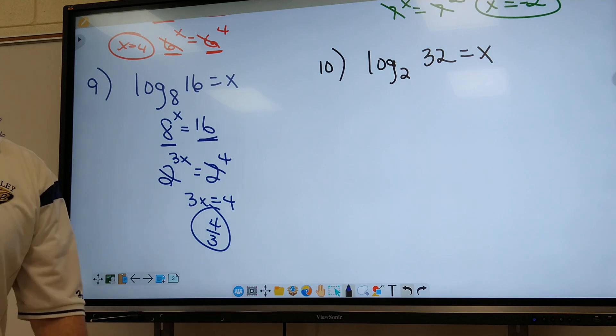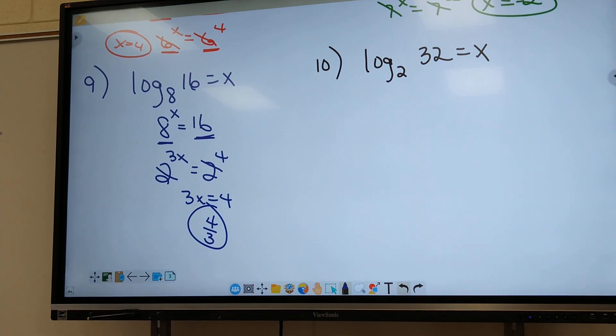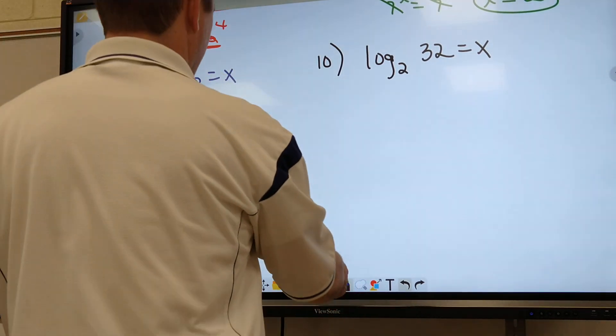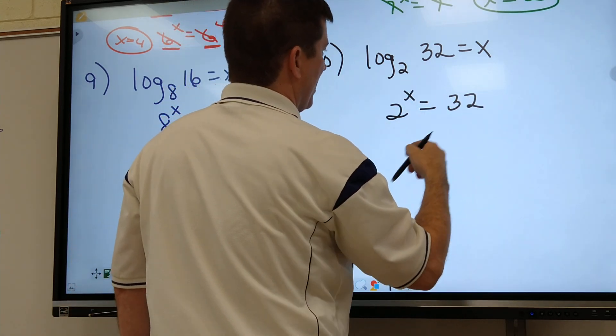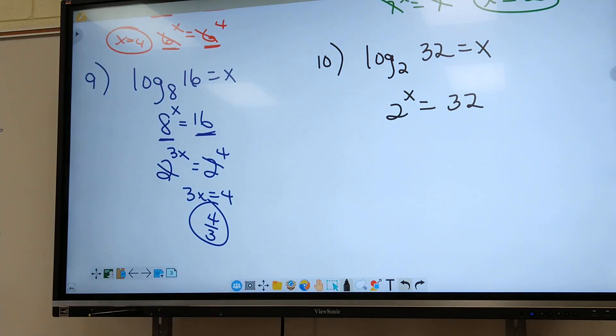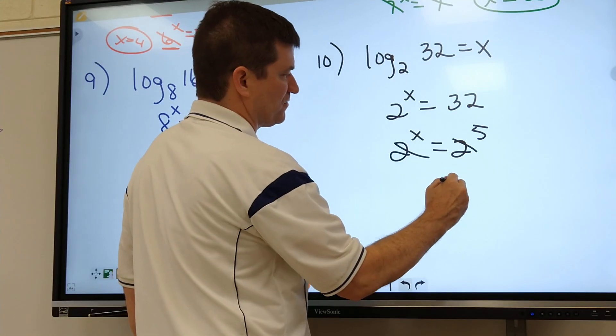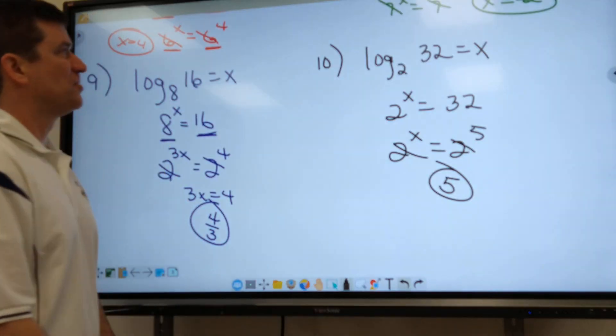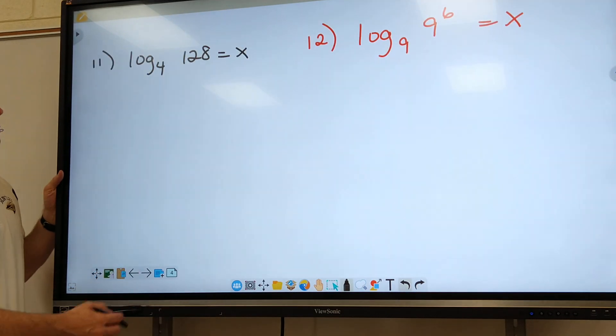All right, you should be able to do number 10. Try it. Let's see what you got. I got two to the x equals 32, right? Got to make them the same number. So 32 changes into two to the fifth. So I got two to the x equals two to the fifth. Mark them out. The answer is five. All right, so those are basically the easy ones. All right, they're going to get a little bit harder now. Everybody good?